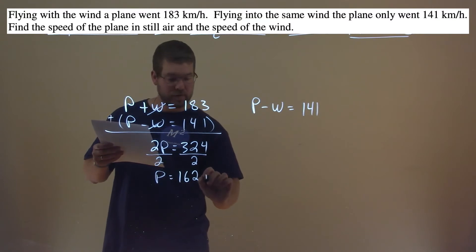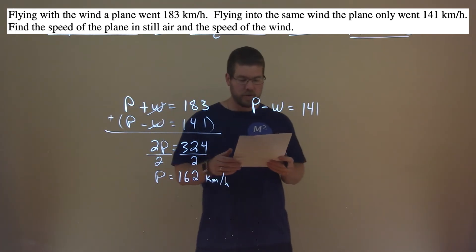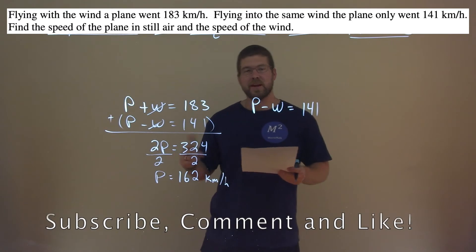And that's kilometers per hour. So the plane is traveling. Its base speed is 162 kilometers per hour, which makes sense because it's between these two speeds, with the wind and the cancel.